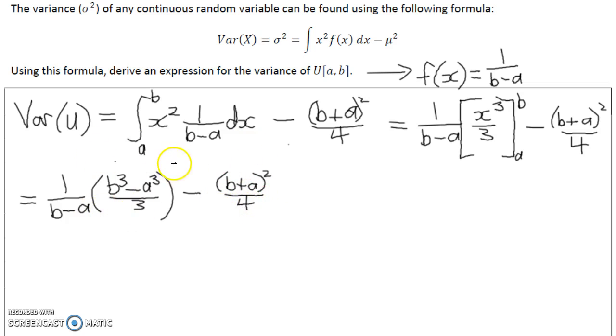Now let's focus on this first term. The numerator here, b cubed minus a cubed, can actually be factorised, and one of the factors is b minus a. So I'm going to factorise b cubed minus a cubed.